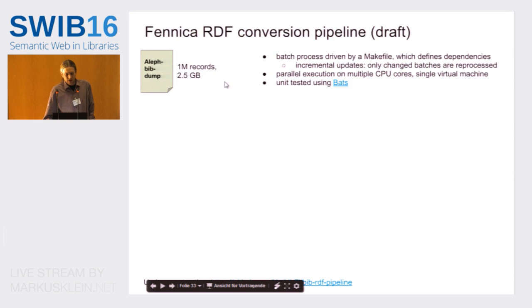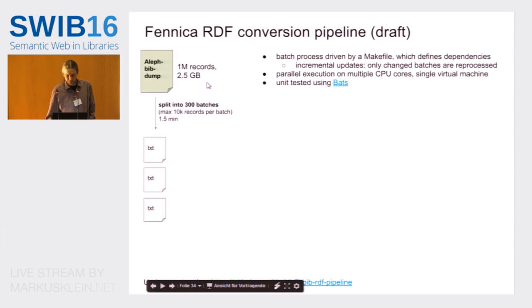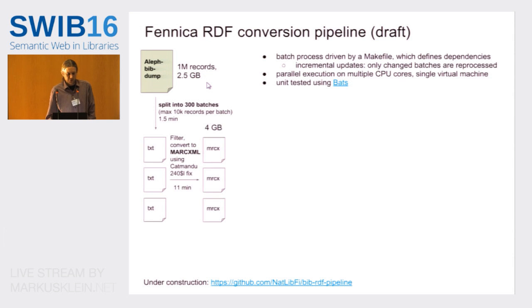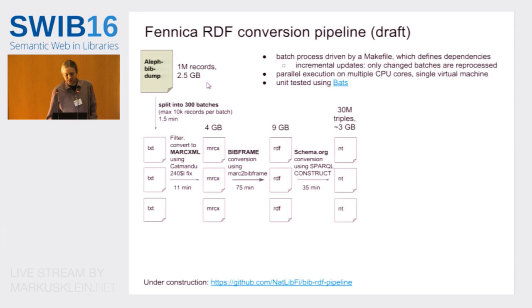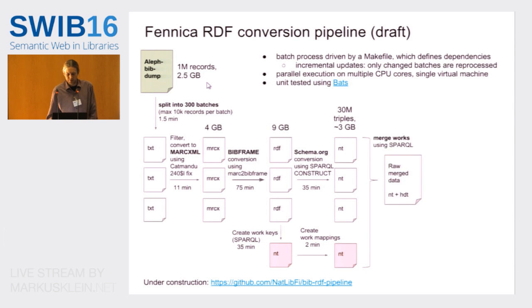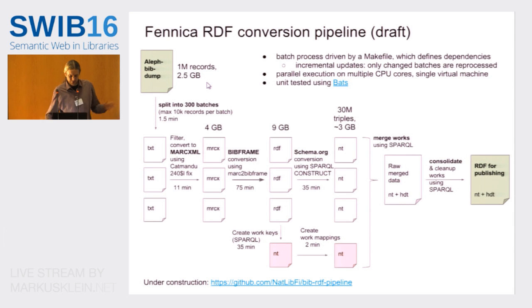We converted this using a pipeline — still a draft but it pretty much works already. It's a batch process: we start with a dump from the database of one million records, split it into smaller batches for parallel processing. First we convert to MARC XML and do some fixes. We use the Library of Congress converter to convert to BibFrame, then go from BibFrame to schema.org using SPARQL. Then we create some work keys and mapping rules based on those, merge them using SPARQL, consolidate everything into a nice triple file, and then make HDT out of that.